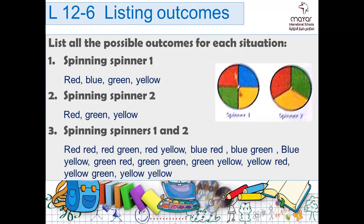Again — list all the possible outcomes for each situation. If we are spinning just one spinner, it's easy to give the outcomes. If we are spinning spinner one and two together, pick one color from the first and match it with all outcomes from the second, then move to the next color, and so on.